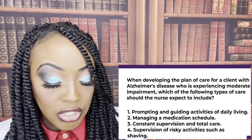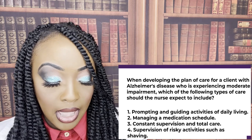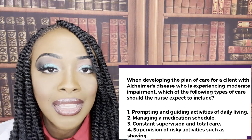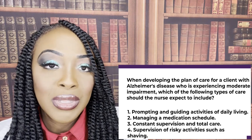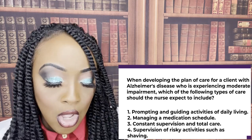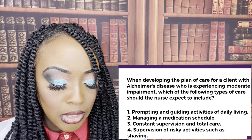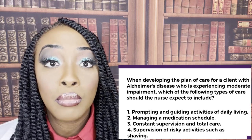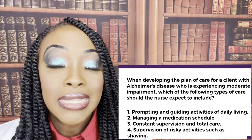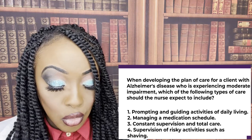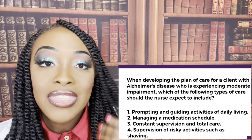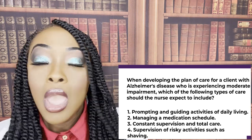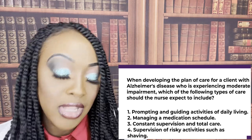Wrong answer choices: two — managing medication schedule — this would apply even with mild impairment, since a mildly impaired patient could forget they took their medication an hour ago. Three — constant supervision and total care — that applies to the terminal stage of this progressive disease. Four — supervision of risky activities such as shaving — that is appropriate for mild impairment. This question is about moderate impairment, where the patient can't make decisions but can still follow directions.